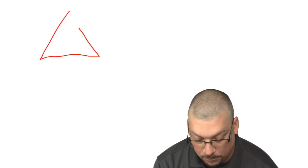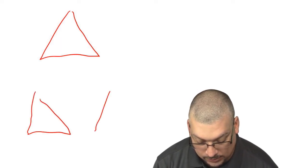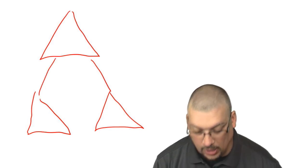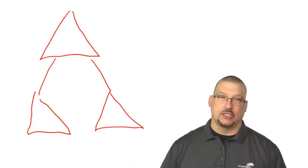Let me draw on the whiteboard here while I'm talking to you. So let's say, for example, that we have three domains. It's not the best drawing in the world, but you get the idea. We have three domains - our parent domain and two child domains.